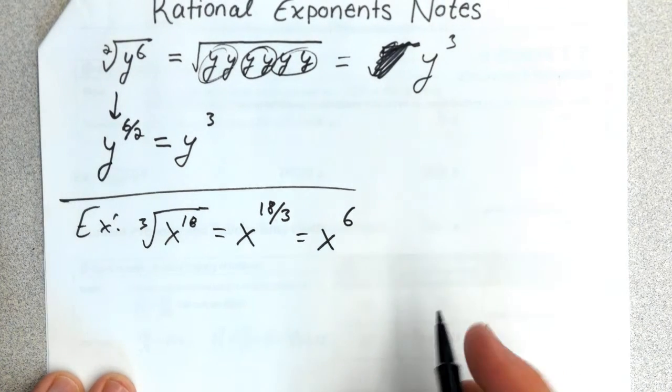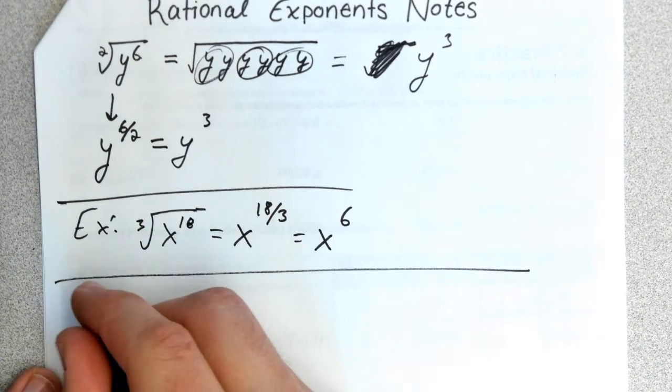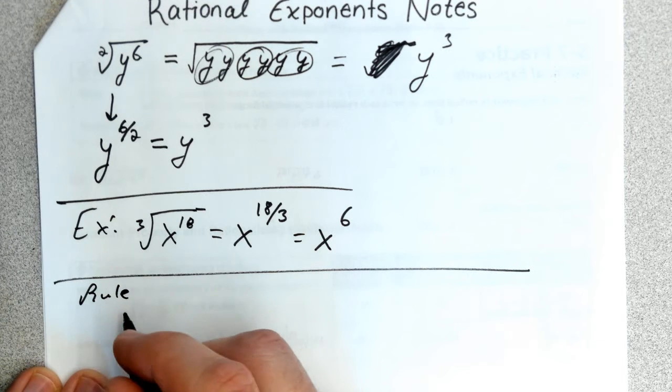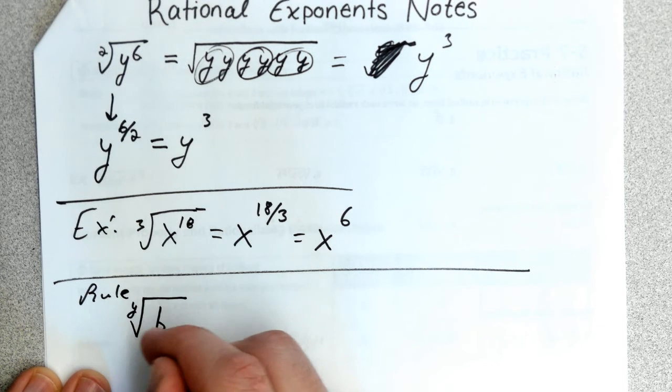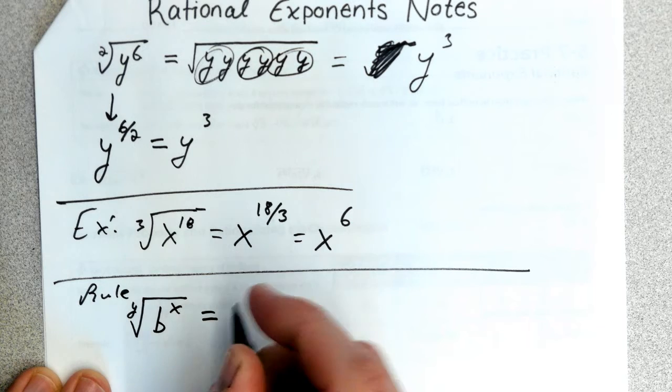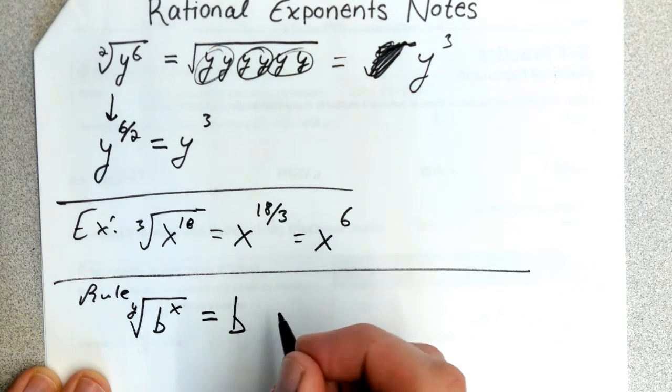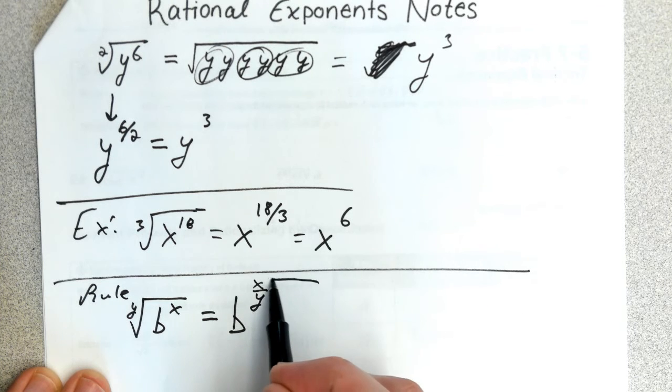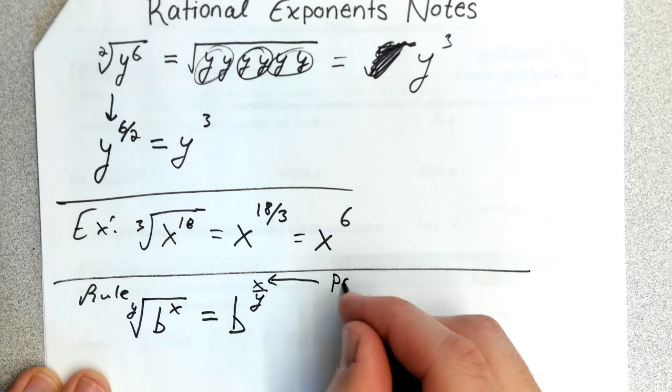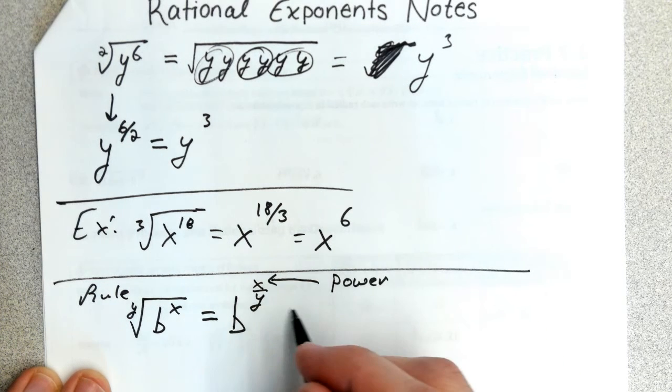In general, our rule is: the y-th root of b^x equals b^(x/y). We always take the power over the root.